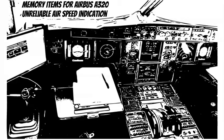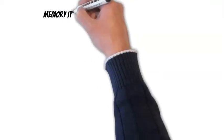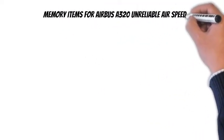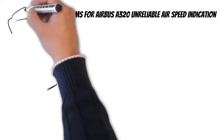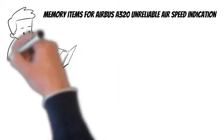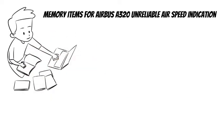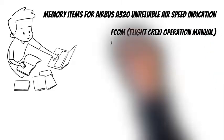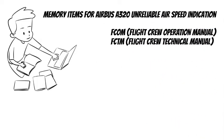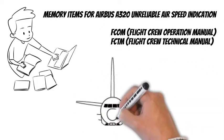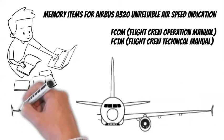Memory Items for Airbus A320 Unreliable Airspeed Indication. The core of all memory items may be found in Flight Crew Operational Manual, section Abnormal and Emergency Procedures, Navigation section, Unreliable Airspeed Indication. For more expandable information, refer to Flight Crew Technical Manual, Abnormal and Emergency Procedures, Navigation section, Unreliable Airspeed Indication.